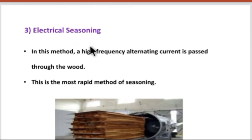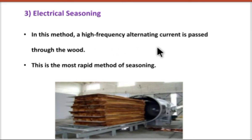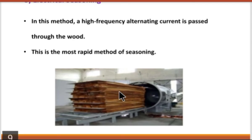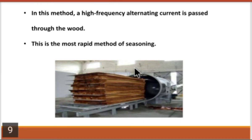Next is electrical seasoning. In this method, a high frequency current is passed through the wood. As current passes through the wood, it generates more heat, and as heat is produced, the wood gets seasoned automatically. That heat removes the moisture from the wood. It is a very rapid method of seasoning but also a very costly method.